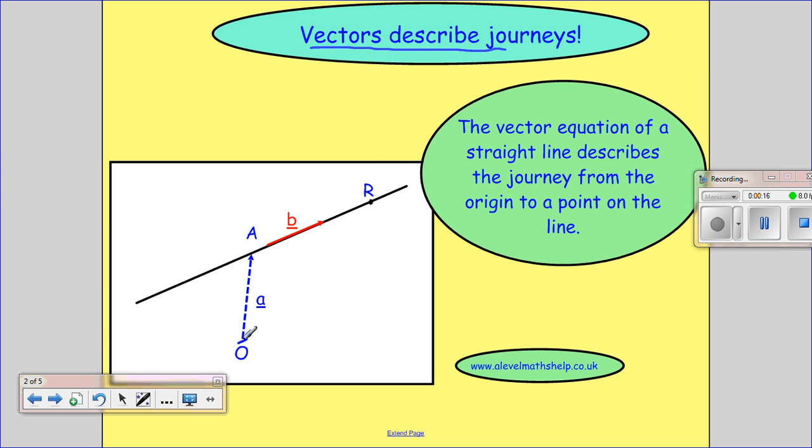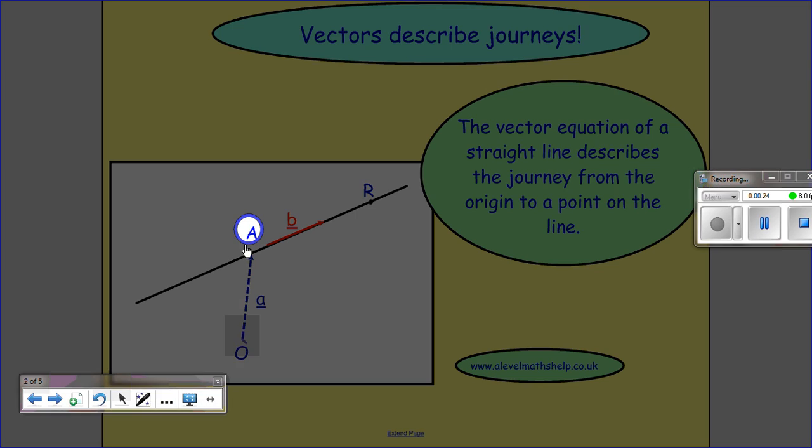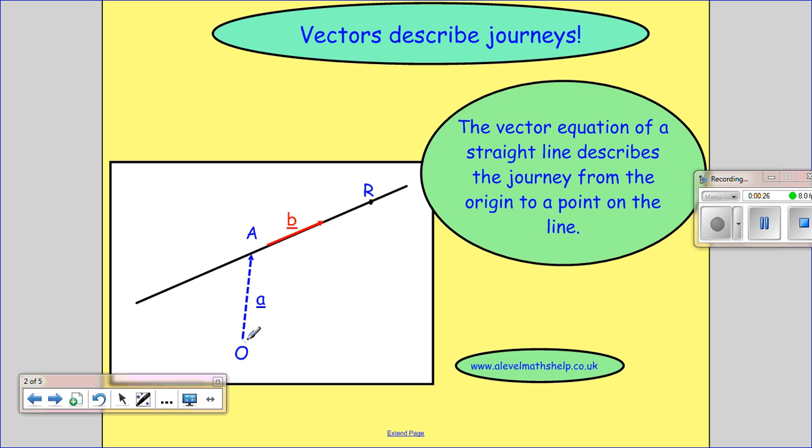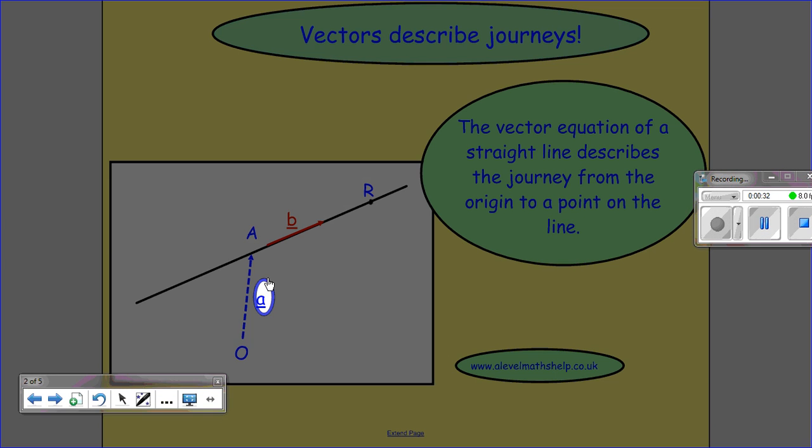So I'm going to start by just making us think of vectors as describing a journey. And what I want to do is make a journey to a point on our line. So if I start at the origin, and I want to get onto my line to start with, so I want to go up to some point on the line, it can be any point anywhere on the line, and I'll do this by going through the position vector OA, which I've labelled here as vector A.